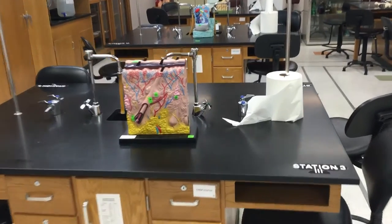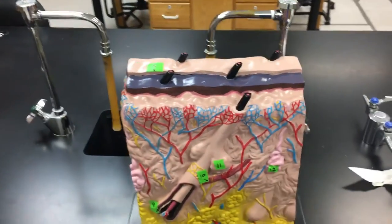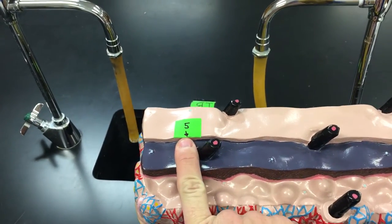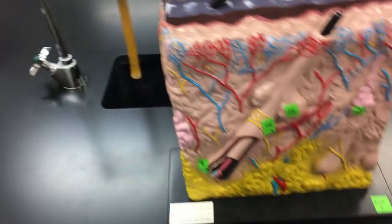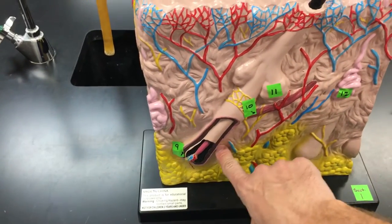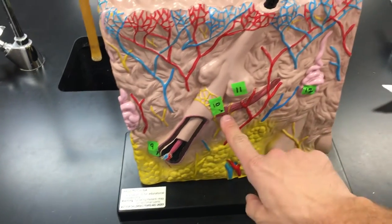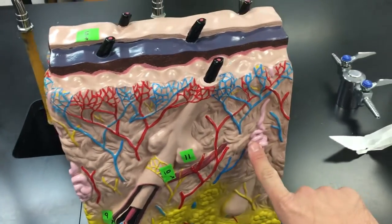Section 1 was the integumentary system model, and the correct answers were: number 5, labeled here, was the stratum corneum, the epidermis. Moving on down to 9 was the hair follicle. 10 was the erector pili muscle. 11 was the sebaceous gland. 12 was the sweat gland.